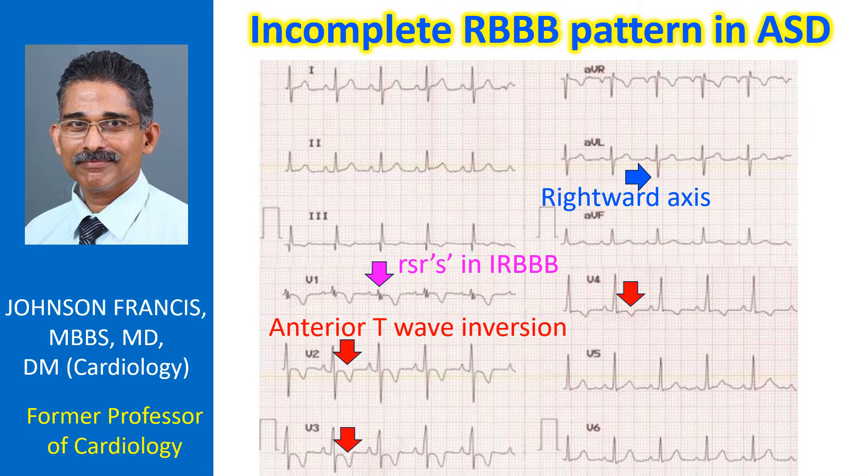A crotchetage sign has also been described in atrial septal defect. The crotchetage sign is a notch on the R waves in inferior leads, which has been reported to have a sensitivity of 70% and specificity above 90% in some studies. Early disappearance of the crotchetage sign was described in 35% of cases after surgical correction of atrial septal defect, even when the IRBBB pattern was persisting.